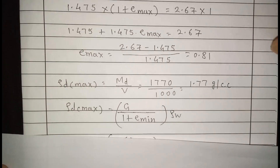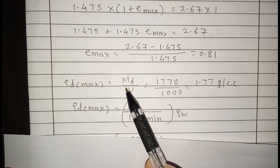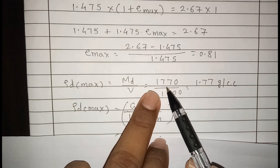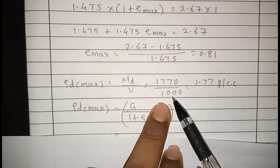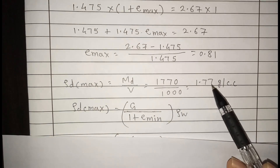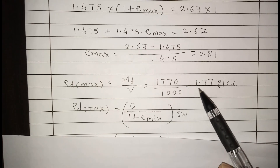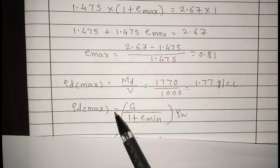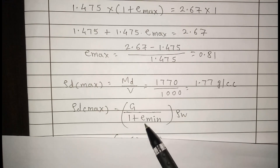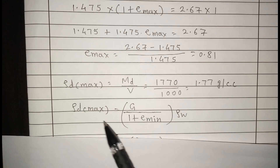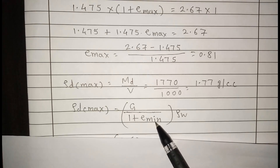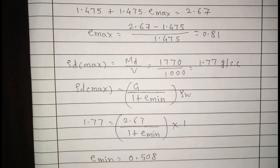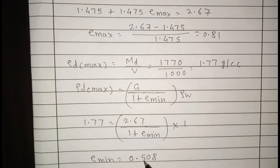Now we calculate ρd_max. Using dry mass divided by volume with the densest mass: 1770 divided by 1000 = 1.77 grams per cc. Using the formula ρd_max = G·ρw / (1 + e_min), since maximum density corresponds to minimum void ratio, we solve for e_min = 0.508.